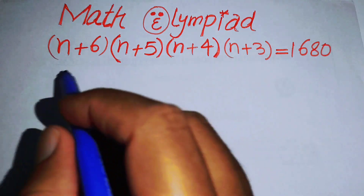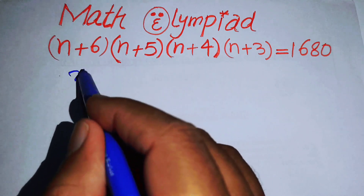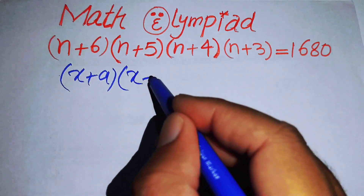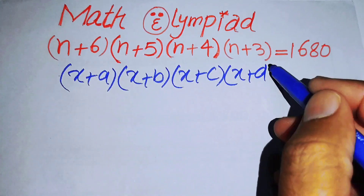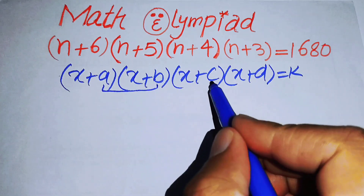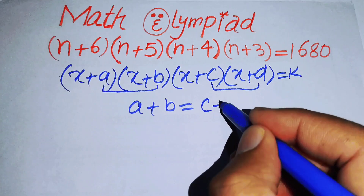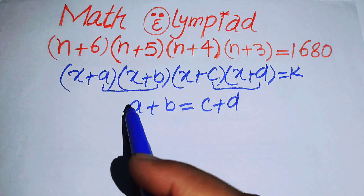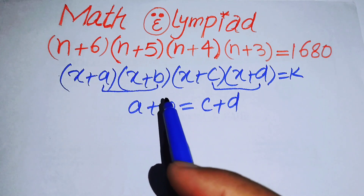The very first thing we are going to use is an important algebraic fact. If we have four factors multiplied by each other in the form (x+a)(x+b)(x+c)(x+d) = k, then you just check one thing: if a+b equals c+d, you can rearrange these factors into that form.